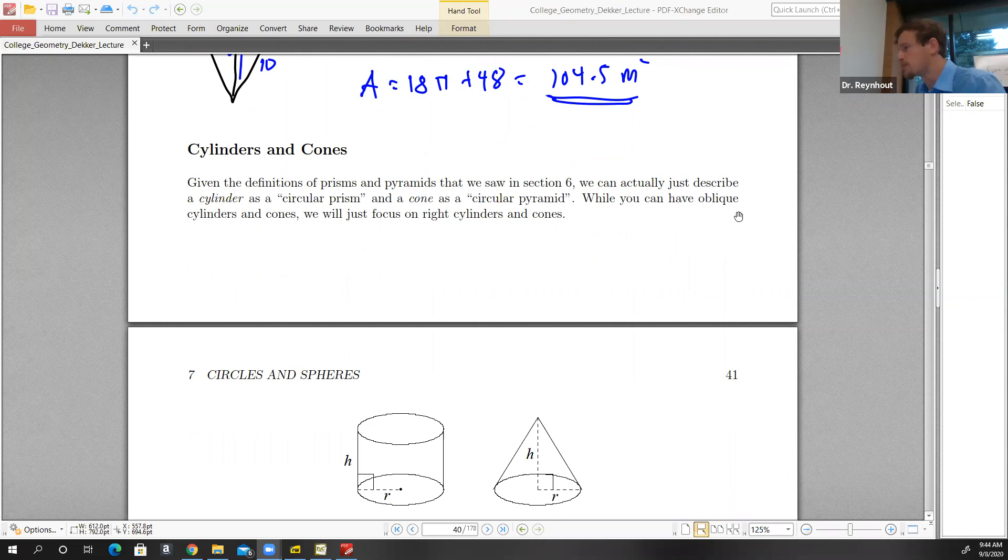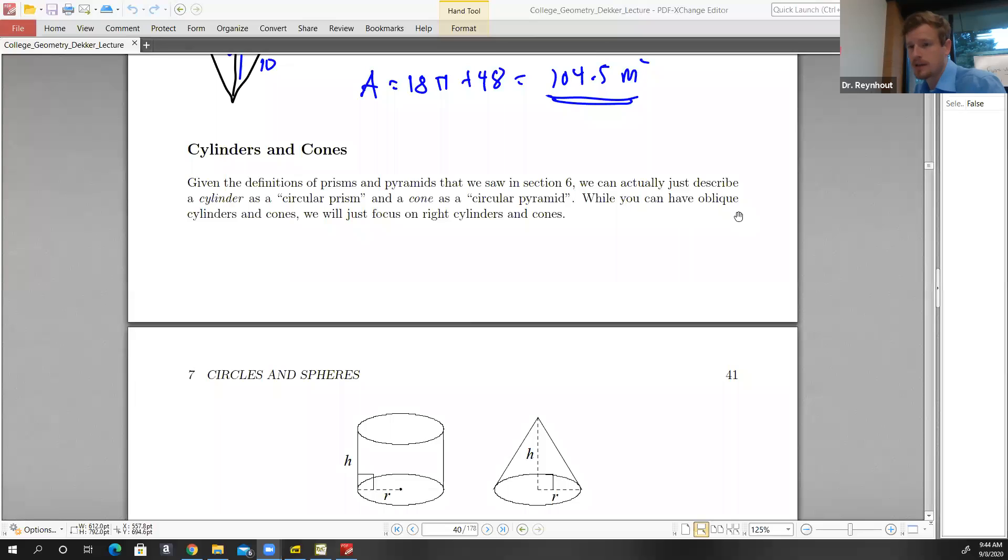We can actually think of cylinders and cones as simply prisms and pyramids where the base is a circle. The definitions that we saw in the previous section, we can just use those definitions here where the base is a circle.